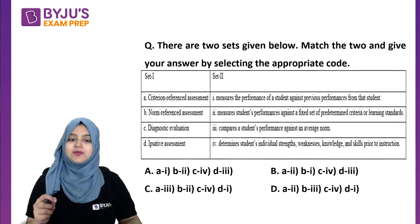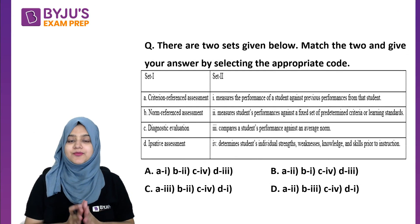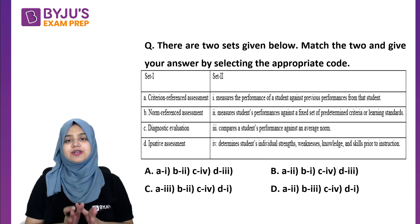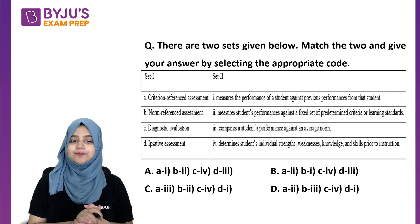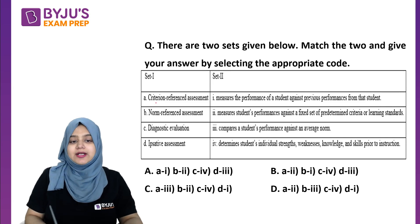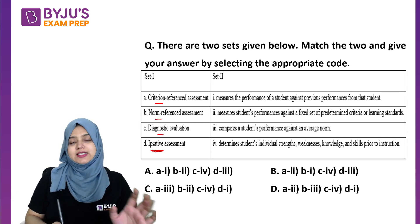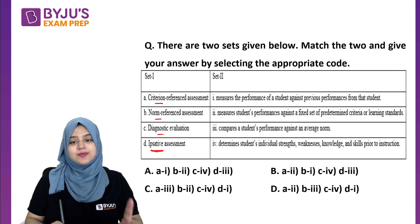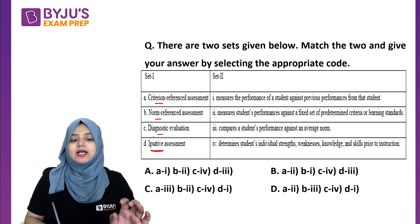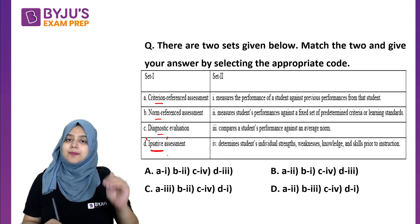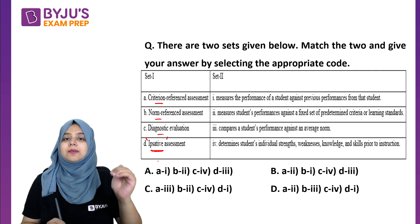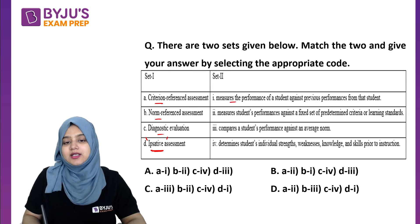Ab jaldi se question dekhenge jo humse exam mein poocha gaya tha. Is question mein different types of evaluation diye huye the jinko hum match karna tha — criterion hai, norm hai, diagnostic hai, and ipsative. So ipsative kya hota hai? Apni hi performance ko apne past record se compare karna.